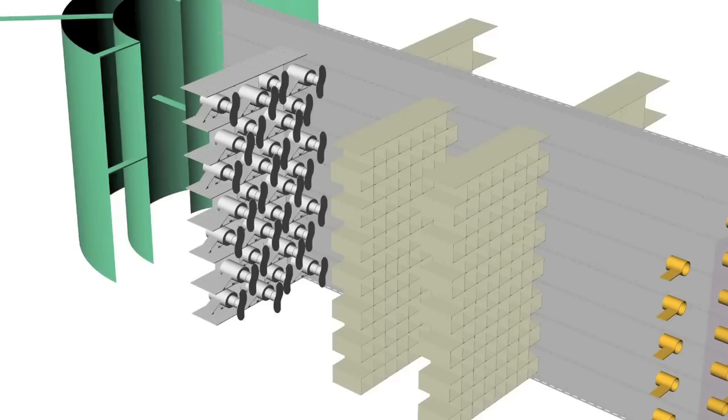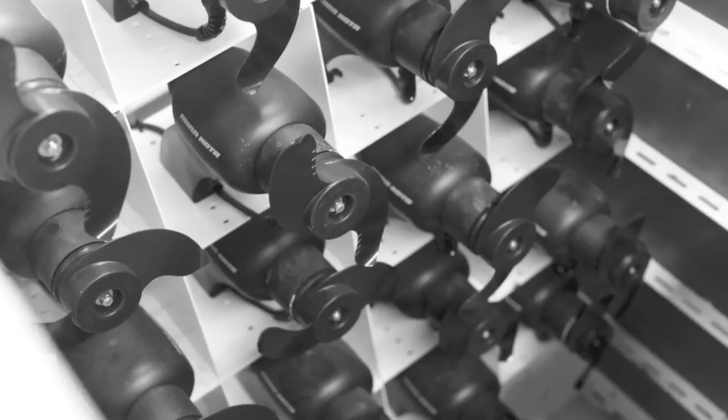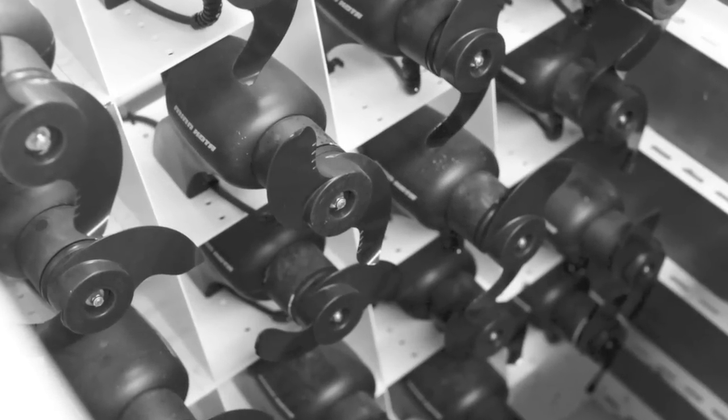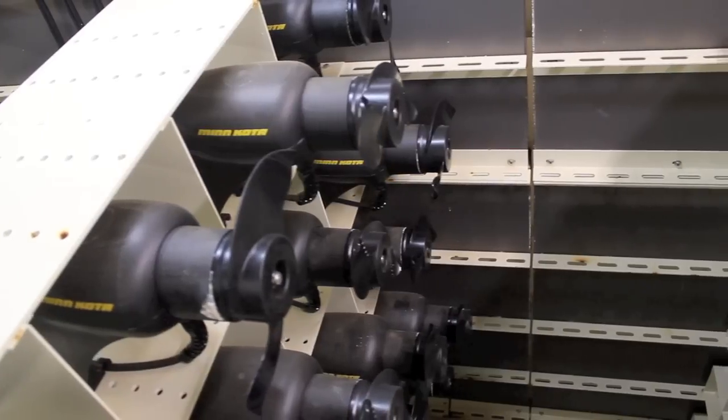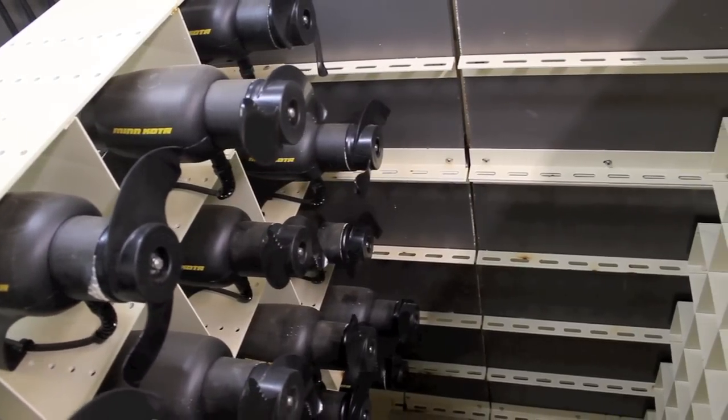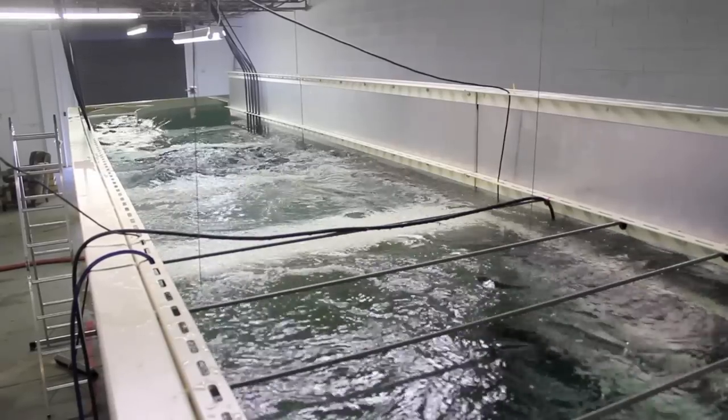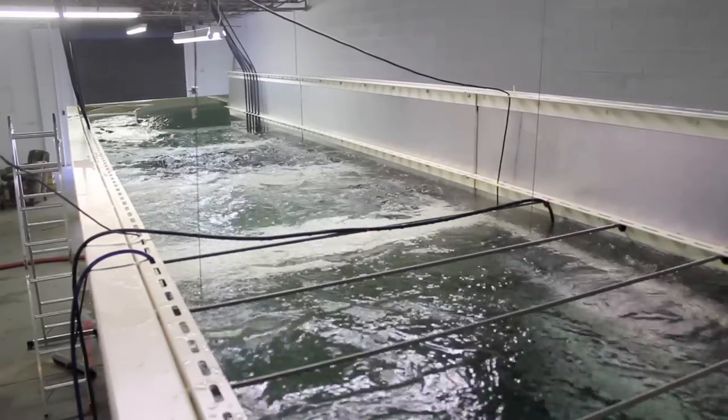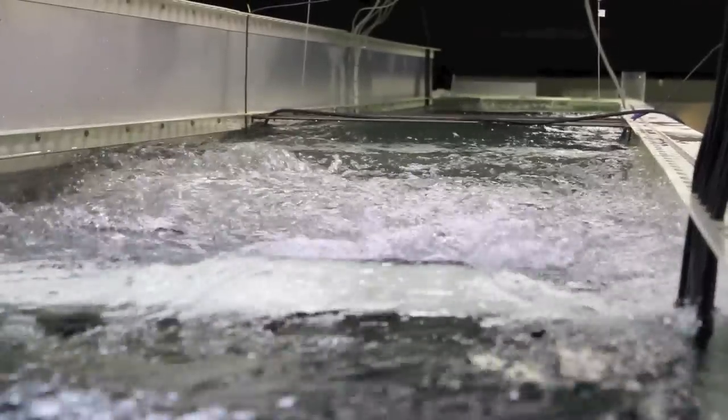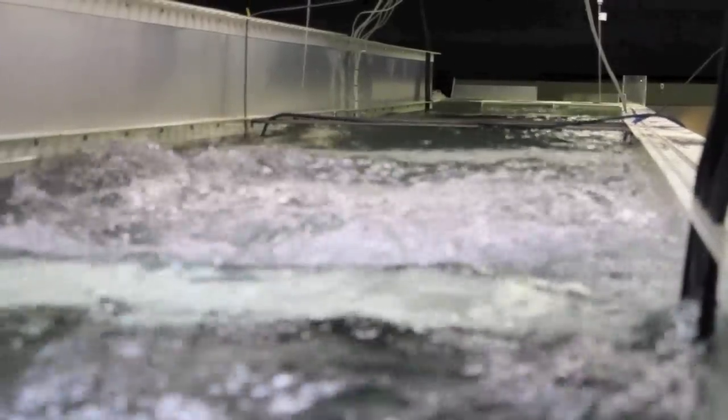Water currents are created and maintained by 24 individually throttlable 1.5 horsepower electric thruster motors located upstream of the test section. Each thruster motor is capable of imparting 100 pounds of force to the flowing water. Maximum water speeds can reach about 1.8 meters per second in the test section area.